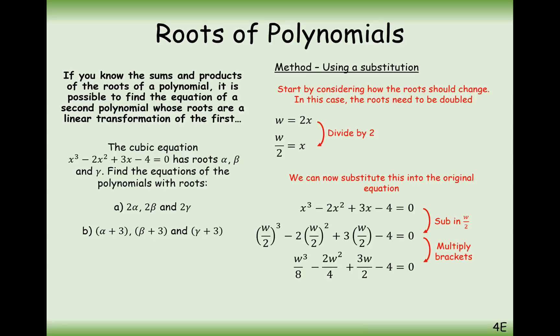So substitute in w over 2 and now expand the brackets. So we get this term here. And generally we're going to want the answers with integer coefficients. Now the common factor, the least common factor out of all of these terms here is 8. So we're going to be multiplying through by 8 so that all of the values are integers. So it's w cubed minus 4w squared plus 12w minus 32. And that is the answer. If this is our cubic equation, then the roots here are going to be 2 alpha, 2 beta, and 2 gamma relative to this equation with roots of alpha, beta, gamma.